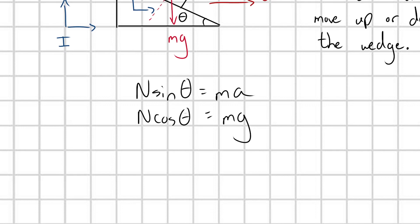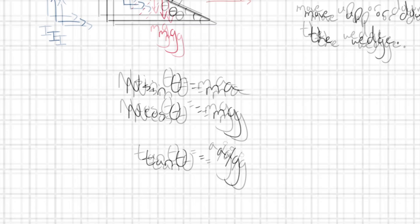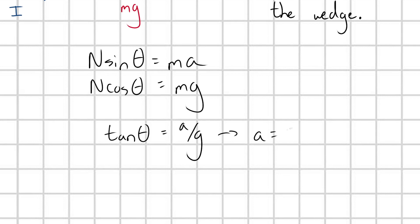And now we're just going to divide everything through. So I'm going to have sine theta over cosine theta. What is that? That's tangent of theta, which is going to be equal to, divide this through, I get A over G. And we're left with very simply, A is equal to G tan theta. And there we go.